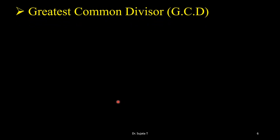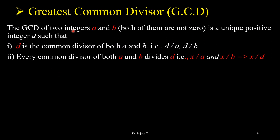Next comes the greatest common divisor, GCD. The GCD of two integers a and b — both not zero — is a unique positive integer d such that: first, d is a common divisor of both a and b, meaning d divides a and d divides b; and second, every common divisor of both a and b also divides d. That is, if x divides a and x divides b, then x must divide d. Then we can say d is the GCD of the two integers.